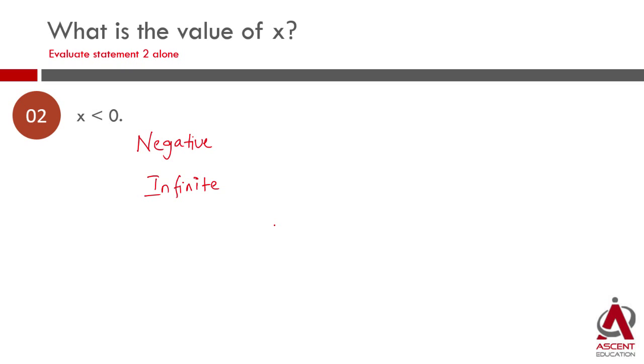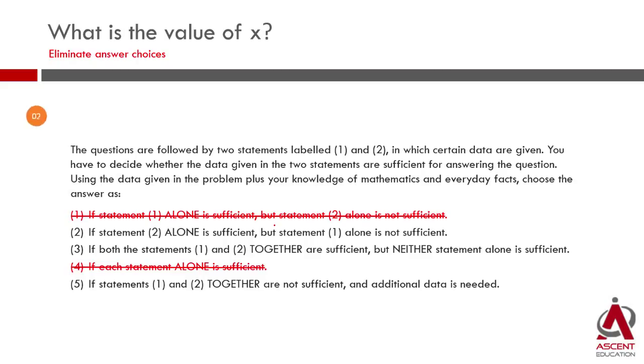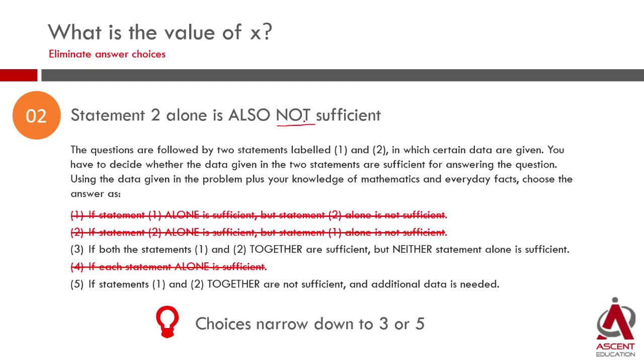So statement two alone is also not sufficient. What else can we eliminate? We can eliminate answer choice 2 also. So you have eliminated 1 and 4 with statement one. We have eliminated answer choice 2 once you have realized that statement two is not sufficient. We are left with answer choice 3 or answer choice 5.